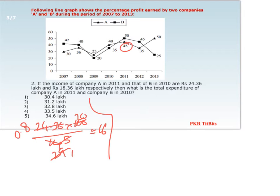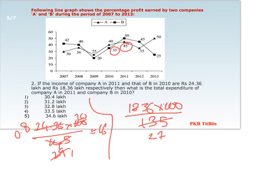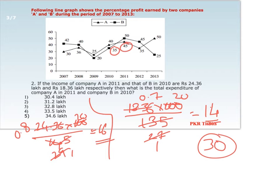For company B in 2010, the profit percentage is 35%. So we get 18.36 × 100 ÷ 135. Calculating approximately, this comes out to be around 14 lakhs. The total of these two values comes out to be around 30 lakhs, and looking at the options the closest is 30.4 lakhs, so the answer is option 1.